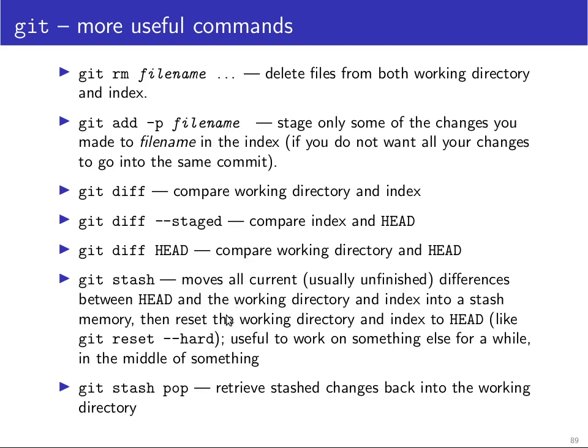Some additional commands that are worth knowing about. If you type git rm and a file name, it deletes a file both from the working directory and from the index. By deleting the file from the index, you are earmarking the deletion of the file to be sent to the repository at the next commit.